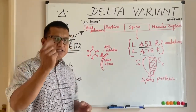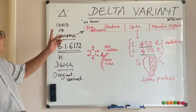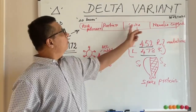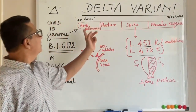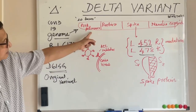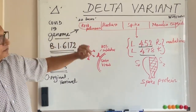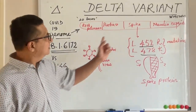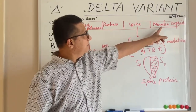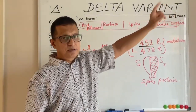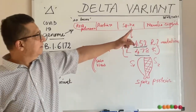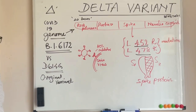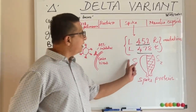As explained in my previous lectures, the COVID-19 genome consists of four main parts: the RNA polymerase portion, the protease portion, the nucleocapsid formation portion, and the genomic part responsible for the spike protein.